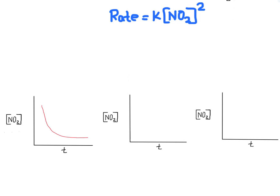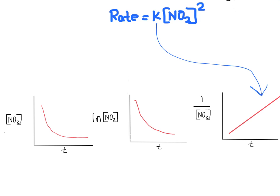We can also determine the order just by looking at graphs. Since the rate is not constant, we first try taking the natural log of the concentration versus time — if we get a straight line, it's first order. In this case we won't. So we take the inverse of the concentration (1/[concentration]) versus time — and because this is a second order reaction, we get a straight line sloping upward. The slope of that line equals k.